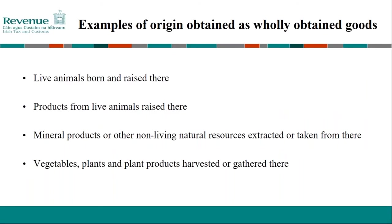Some examples of wholly obtained goods include: live animals born or raised there, products from live animals raised there, mineral products or other living natural resources extracted or taken from there, and vegetable plants and plant products harvested or gathered there. These are what would be considered to have origin as wholly obtained goods.